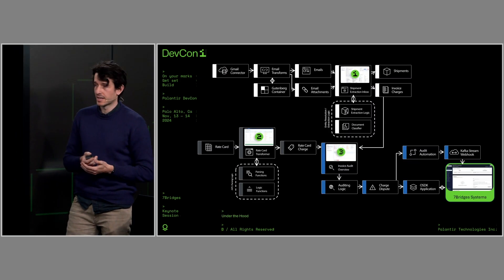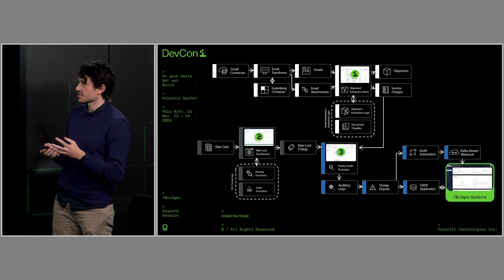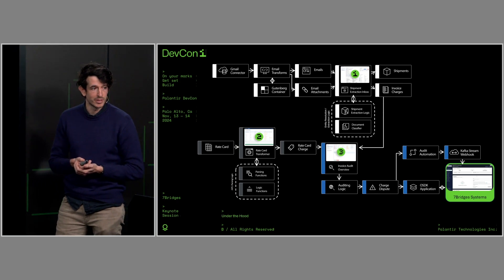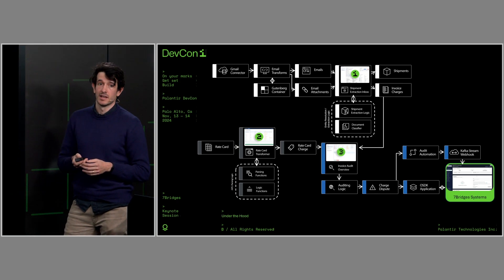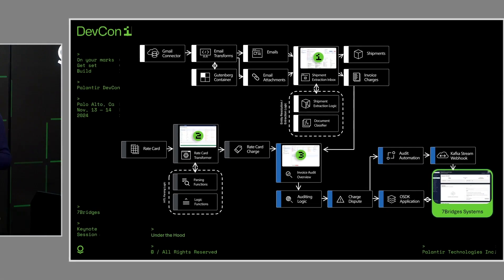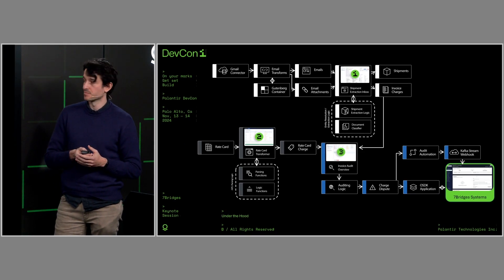So what have we actually built in AIP? There are three steps. The first is shipment and invoice extraction — we've built a connector to Gmail, pull out all the threads and attached documents, classify those with LLMs, and extract structured data using logic functions, creating our shipment and invoice ontology. Then there's the rate card and contract step, where we built a human-in-the-loop workflow system to extract the semantic meaning from the rate card and put it into a structured format an LLM can understand, because on its own it's too complex at this point.